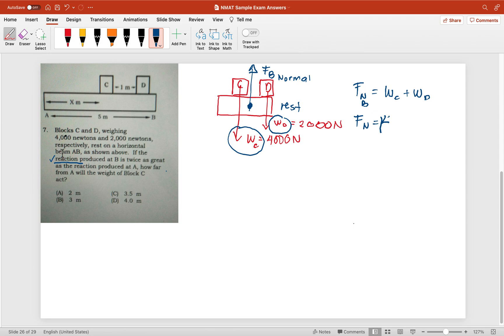So we have 4,000 plus 2,000, which gives us 6,000 N. But this normal force, according to the problem, which is a rare type of problem,